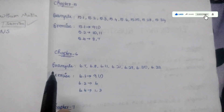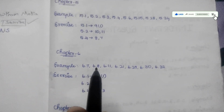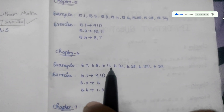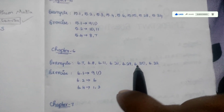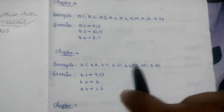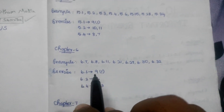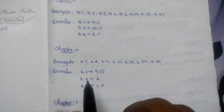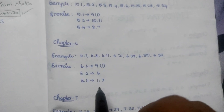Chapter 6: Example 6.7, 6.8, 6.11, 6.21, 6.29, 6.30, 6.32. Exercises 6.1, 9, 6.2, 6.4, 13.